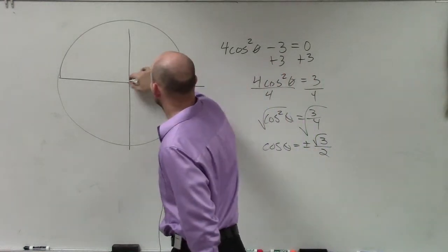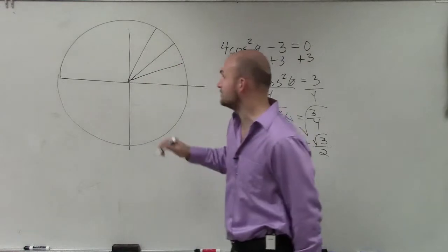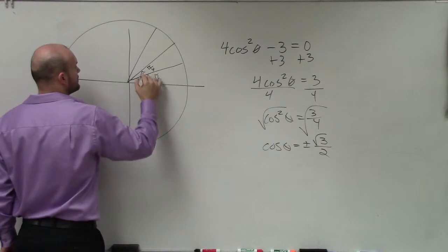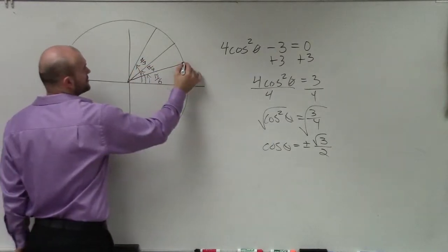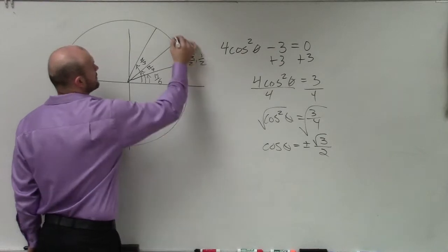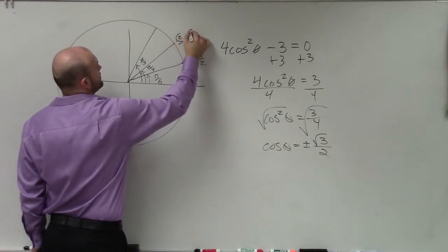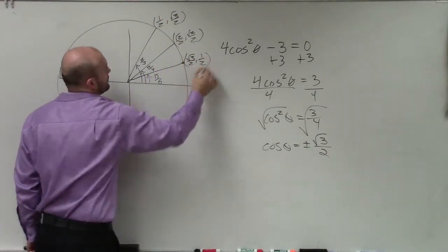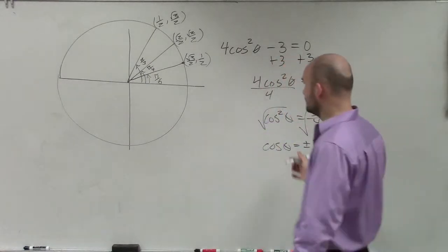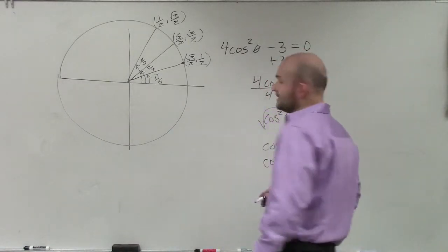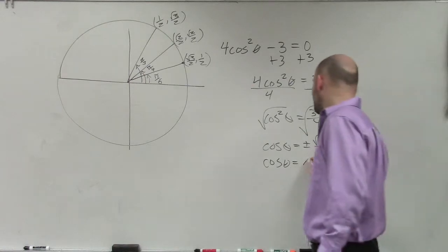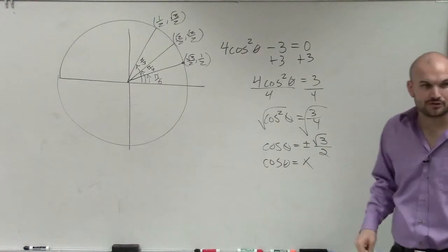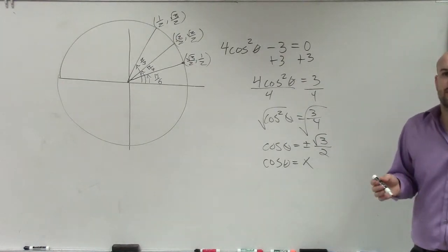If you guys look at the first quadrant, there are three important angles we talked about: pi over 6, pi over 4, and pi over 3. The first point is square root of 3 over 2 comma 1 half; square root of 2 over 2 comma square root of 2 over 2; and 1 half comma square root of 3 over 2. Now remember, the cosine of any angle — when you have a point on the unit circle — represents your x-coordinate. For what angle does cosine, the x-coordinate, equal the square root of 3 over 2?